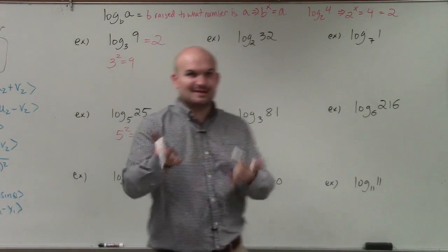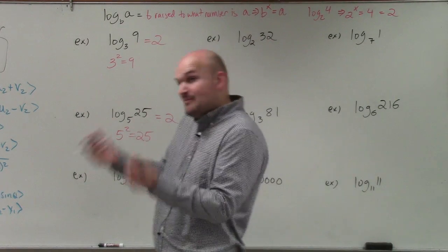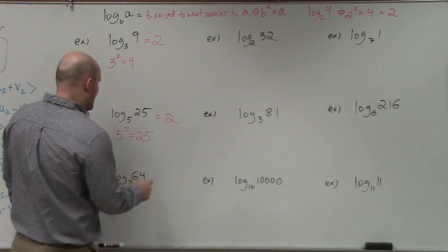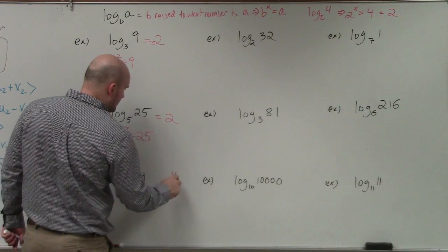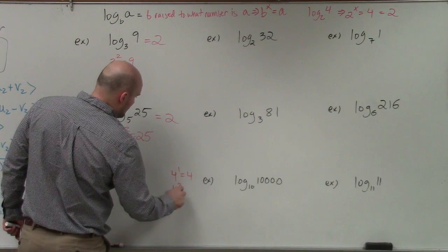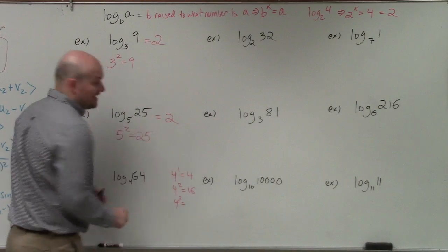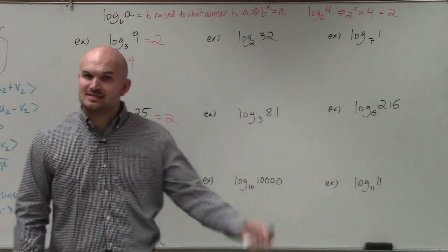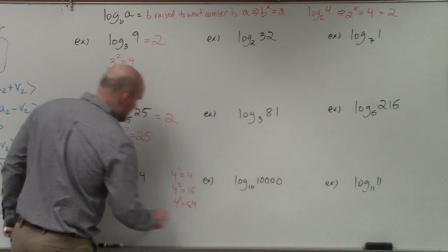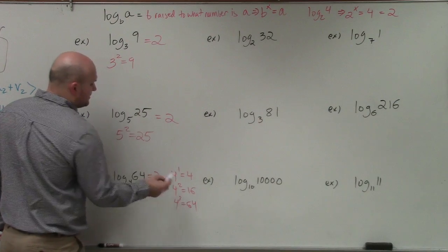Now we get into 4 and 64. Some of you might not remember 4 raised to what number gives you 64, so if you get stuck, just start listing out powers of 4: 4 to the first is 4, 4 squared is 16, 4 cubed — 4 times 4 is 16 times 4 again — is 64. So 4 raised to what power gives you 64? The answer is 3.